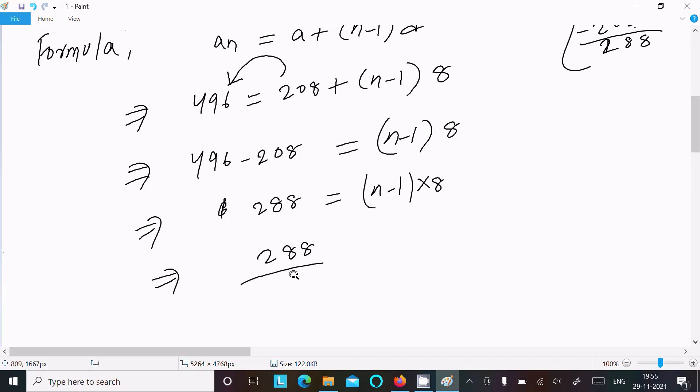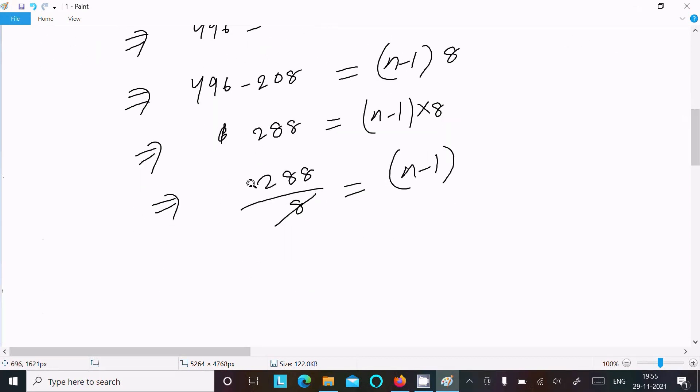288. After that, (n-1) × 8. So this is in multiplication, this will go into division. So 288 divided by 8 = n - 1. So 3 times that cancels, 24, 24 here, 28 minus 24, that is equal to 4.